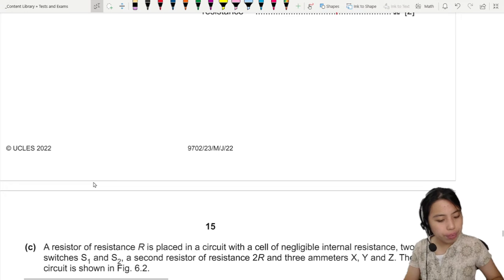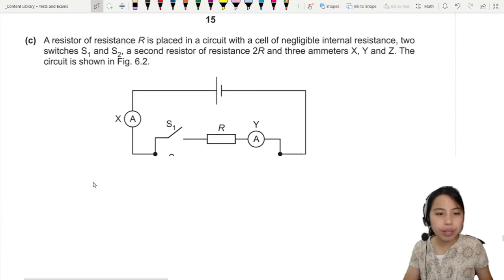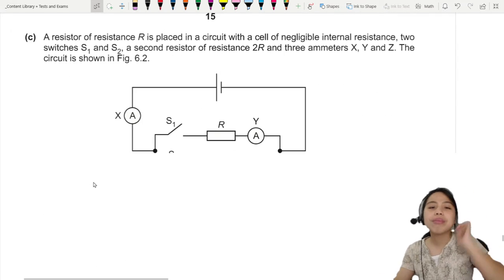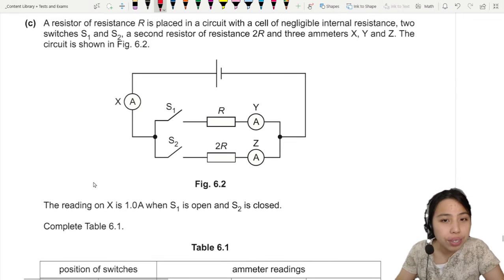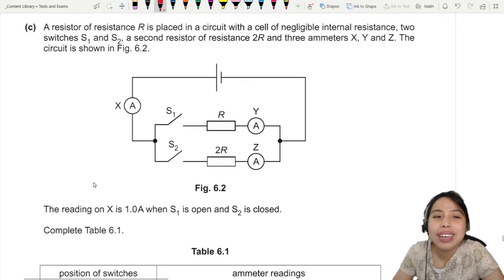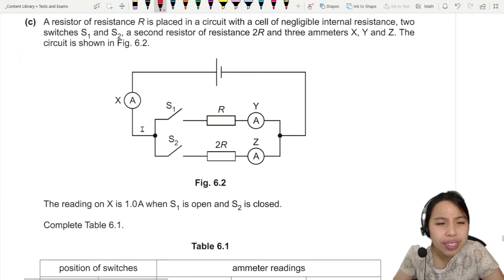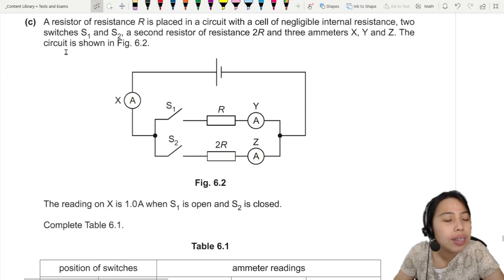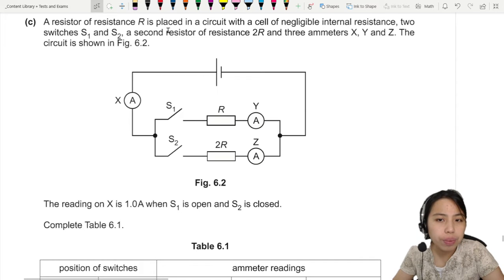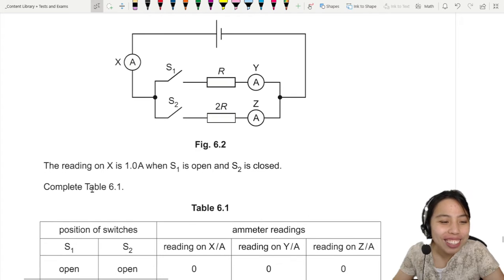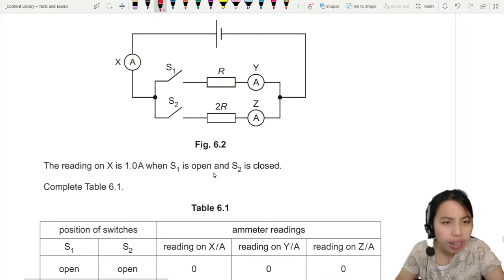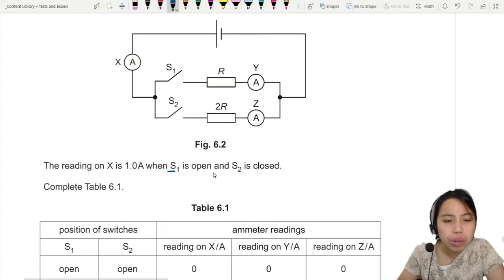Last part of this circuit question. This one is where things get interesting. Circuit analysis. Circuit changes. So a resistor of resistance is placed in a circuit with negligible internal resistance. Fantastic. Two switches and three ammeters. Circuit is shown. The reading on X is 1A when S1 is open and S2 is closed.